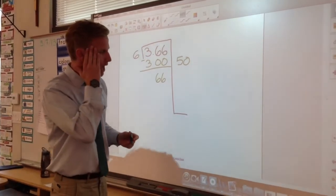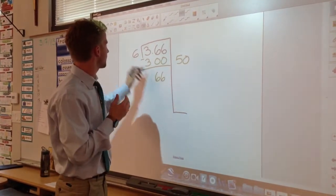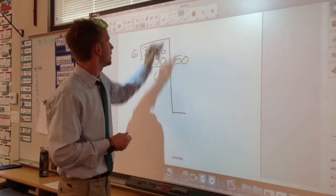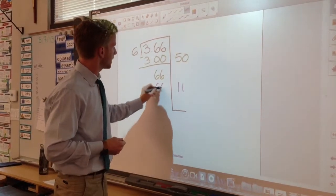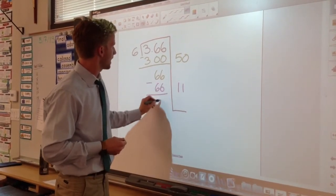Now I'm thinking of a number multiplied by 6 that's going to get me close to 66. I know that 11 times 6 gives me 66, and I subtract that, and I get 0.